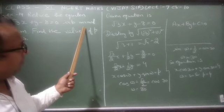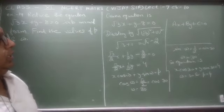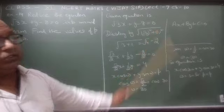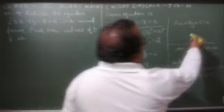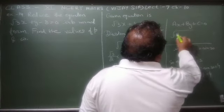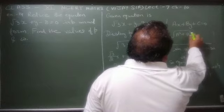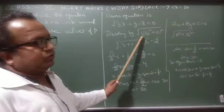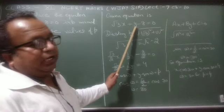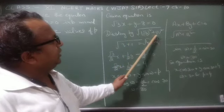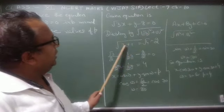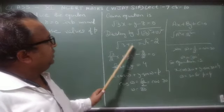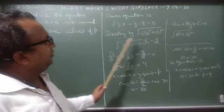Normal form का working rule देखो। इस equation से compare करेंगे तो हमें divide करना होता है √(a² + b²) से। यहाँ a = √3 है, तो √3 का square 3 होगया। y का coefficient 1 है, 1 का square 1। तो 3 + 1 = 4, और 4 का square root 2 है।